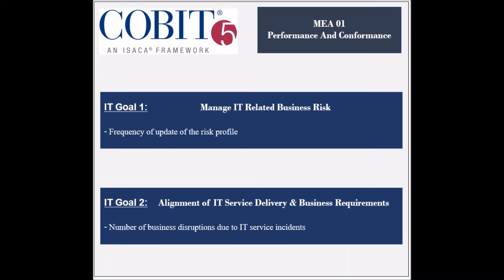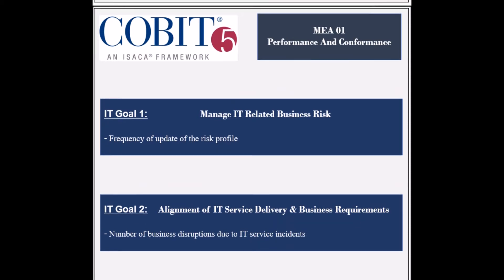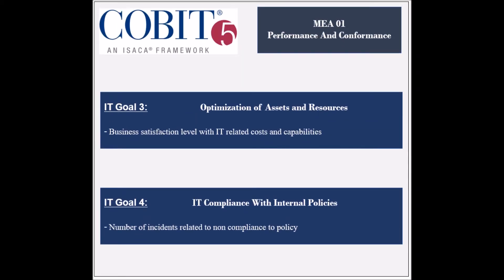The process supports the achievement of four IT-related goals. The first supported IT goal is to manage IT-related risks, and its achievement is measured by the percent of business processes covered by risk assessments and by the frequency of update of the risk profile. The second IT goal is to ensure the alignment of IT services with business requirements, and its achievement is measured by the number of business disruptions due to IT service incidents.